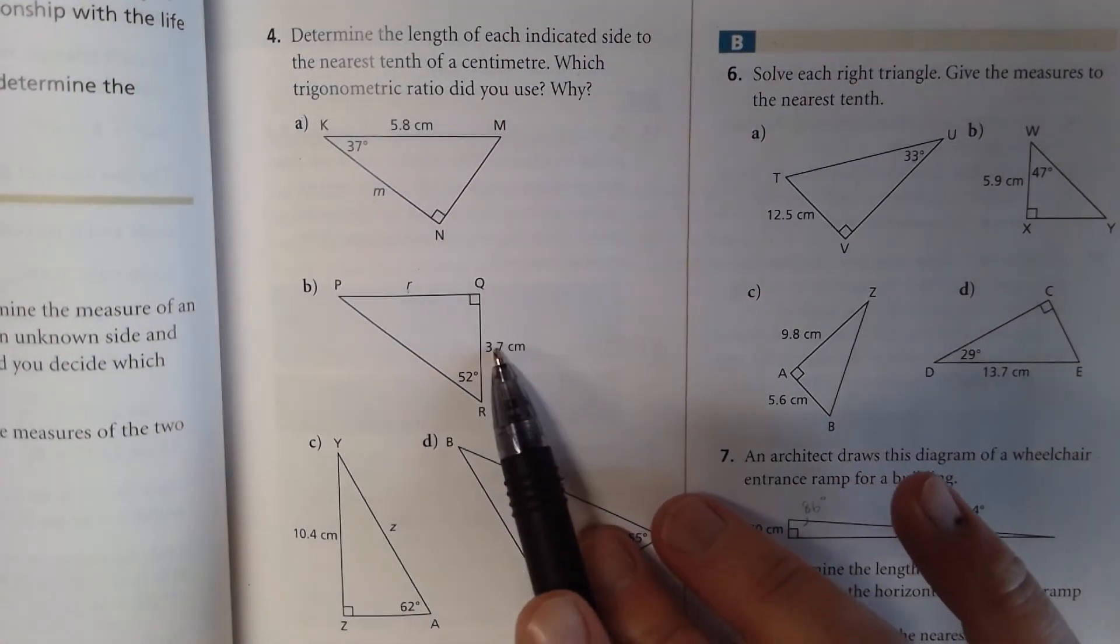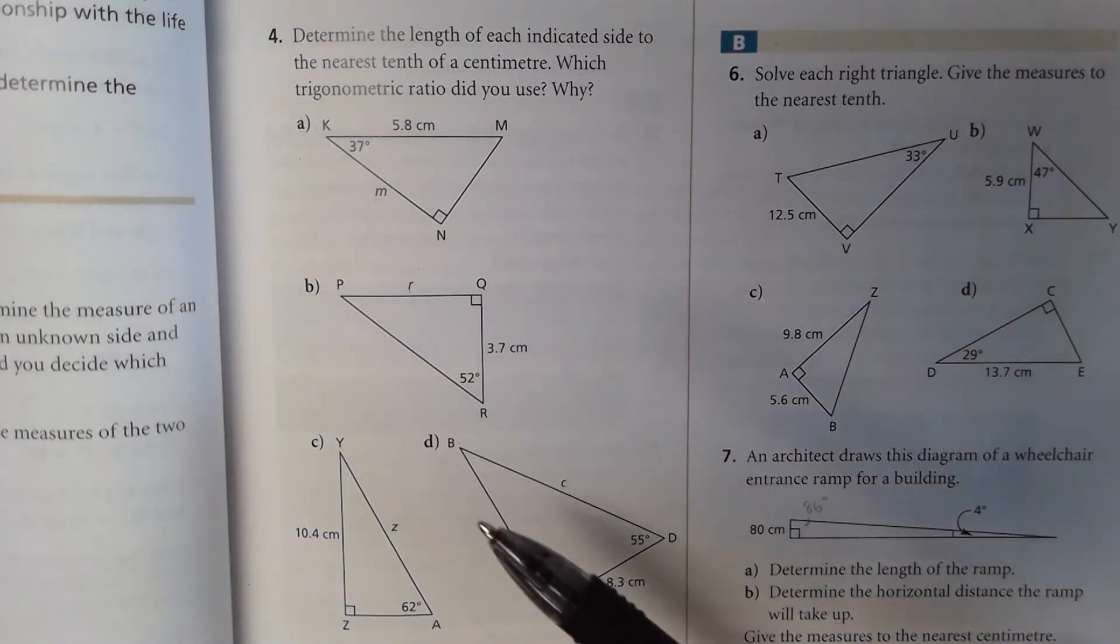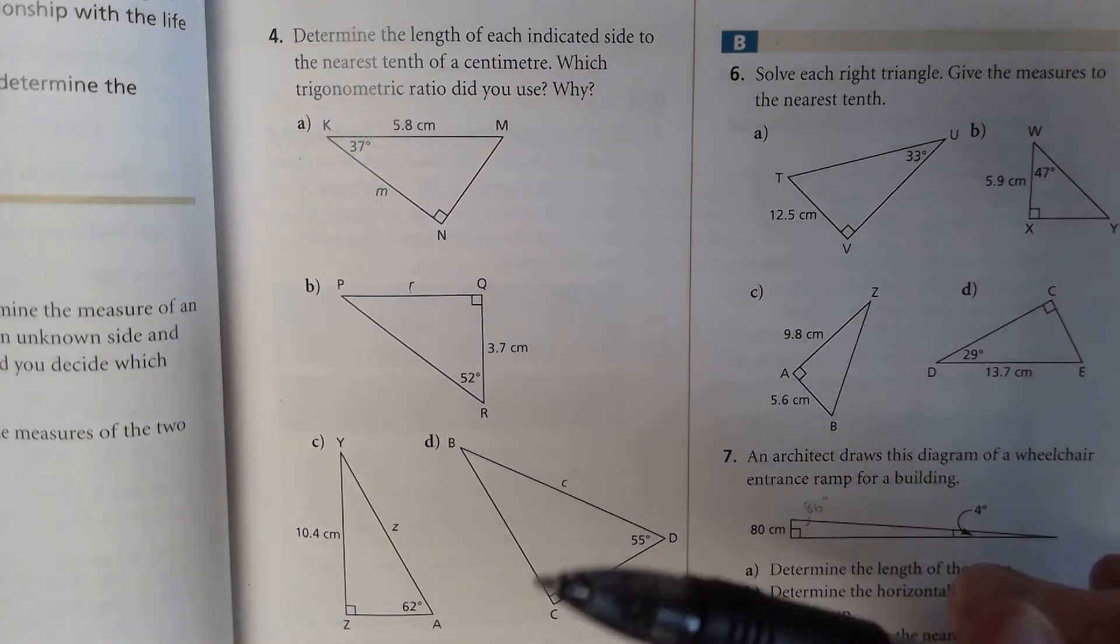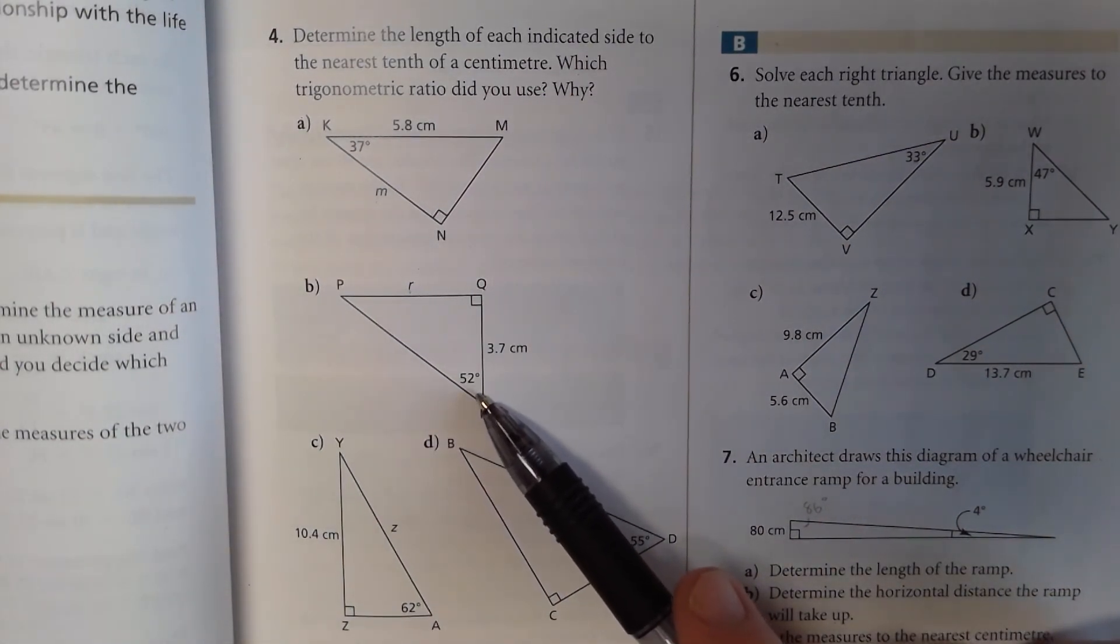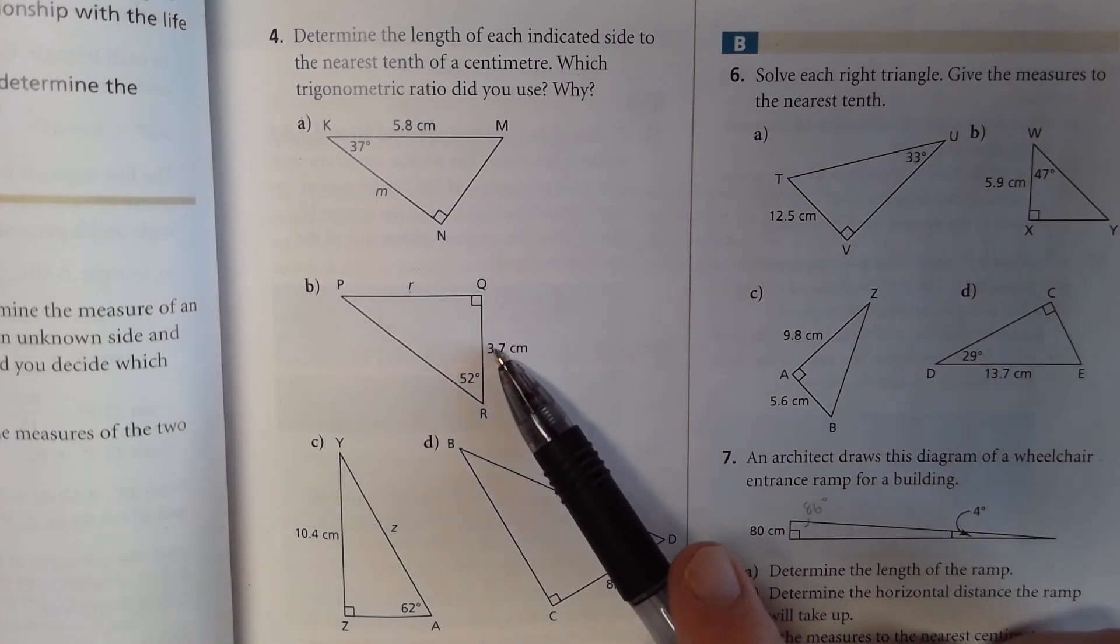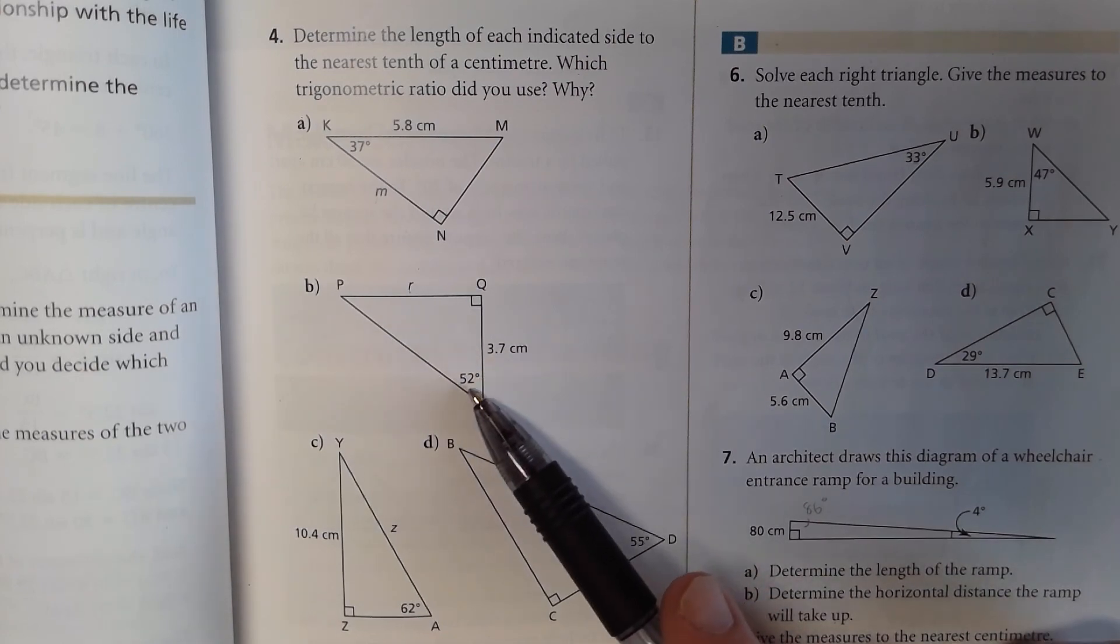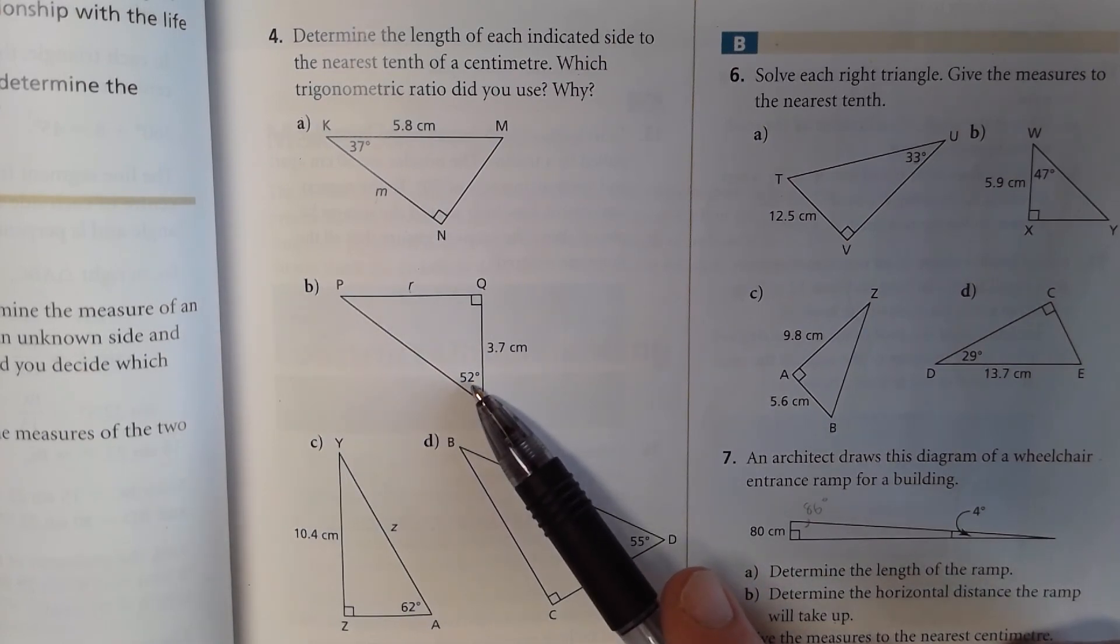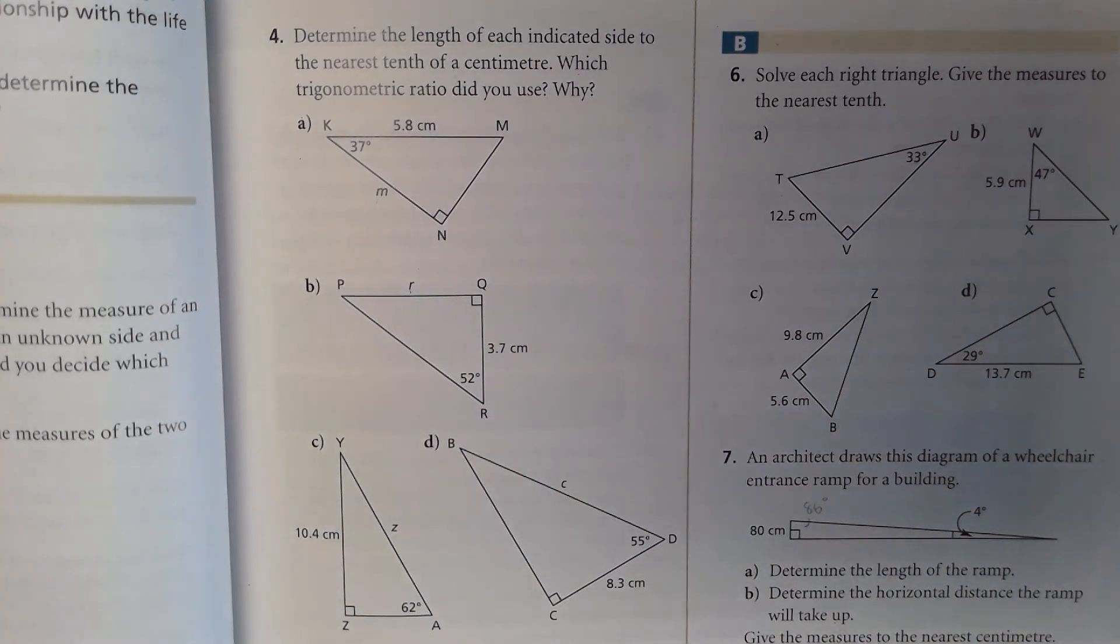We'll do another one. Here's your known side, unknown, and the angle. The hypotenuse is unknown this time. We want to solve the middle side. So it's a 52 degree angle. It's opposite of your known angle and this side is adjacent, right beside. So it's tangent. Tangent or tan 52, x over 3.7. So again, it's a multiplying question.